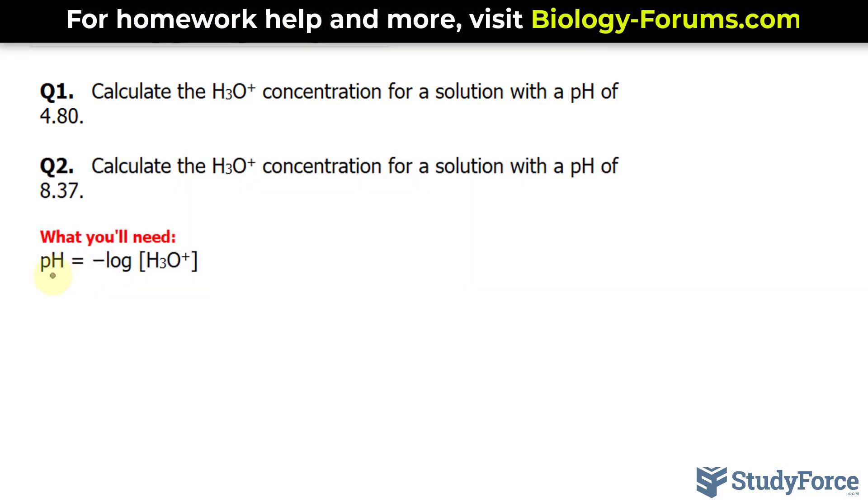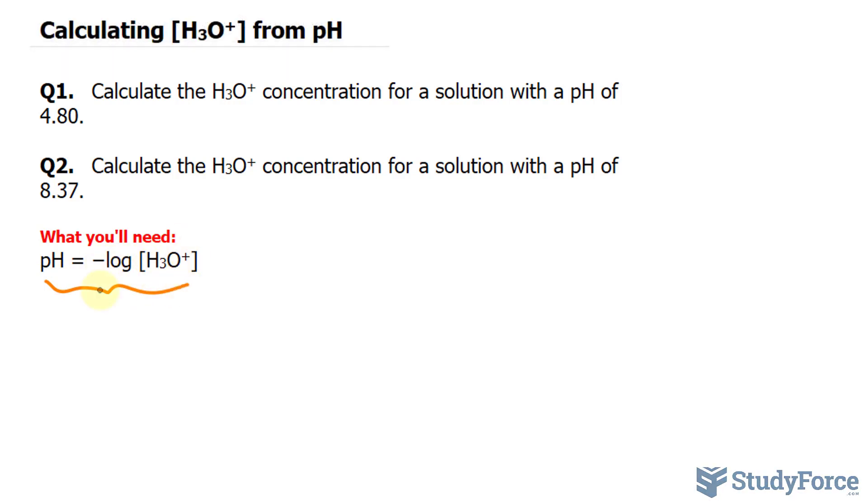To do this, we'll begin by using the equation that defines pH, which is negative log of the concentration of H3O+. So substituting 4.80 where we have pH, we'll write down 4.80 is equal to negative log, and we are looking for H3O+. The concentration of H3O+ will be represented by the letter X, just for simplicity.